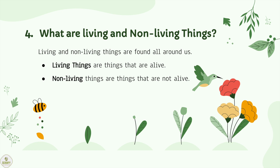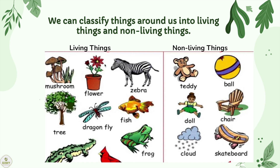Now we will learn about what are living and non-living things. Living and non-living things are found all around us. Living things are alive. Non-living things are not alive. We can classify things around us into living things and non-living things.